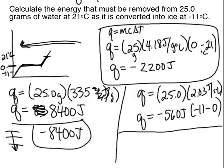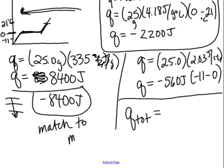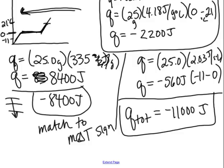The total amount of heat released: add all three steps together — that gives negative 11,000 joules. That's just a quick review. You're not going to see a lot of these problems; I just wanted to remind you of the existence of heating curves and make sure you have a working knowledge of them.